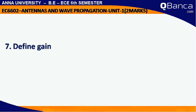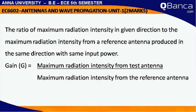Define Gain: The ratio of maximum radiation intensity in a given direction to the maximum radiation intensity from a reference antenna produced in the same direction with the same input power. Gain G equals maximum radiation intensity from the test antenna divided by maximum radiation intensity from the reference antenna.